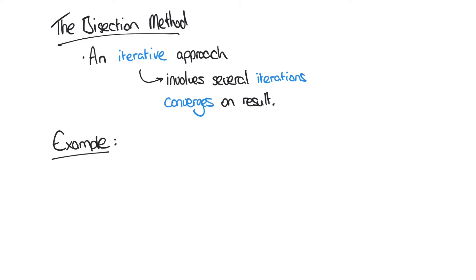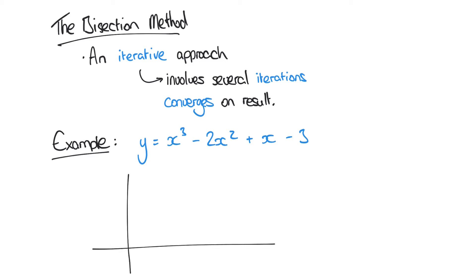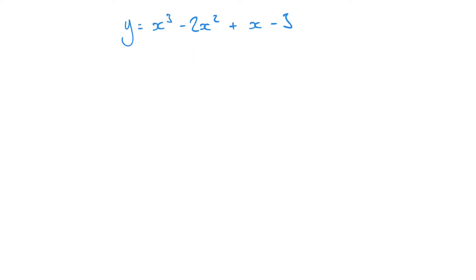Let's take this cubic expression as an example. We have y equals x cubed minus 2x squared plus x minus 3. Let's suppose that we know that this function crosses the x-axis somewhere between 0 and 3. We'll show that that's the case by using our equation and substituting those two boundaries, x equals 0 and x equals 3.